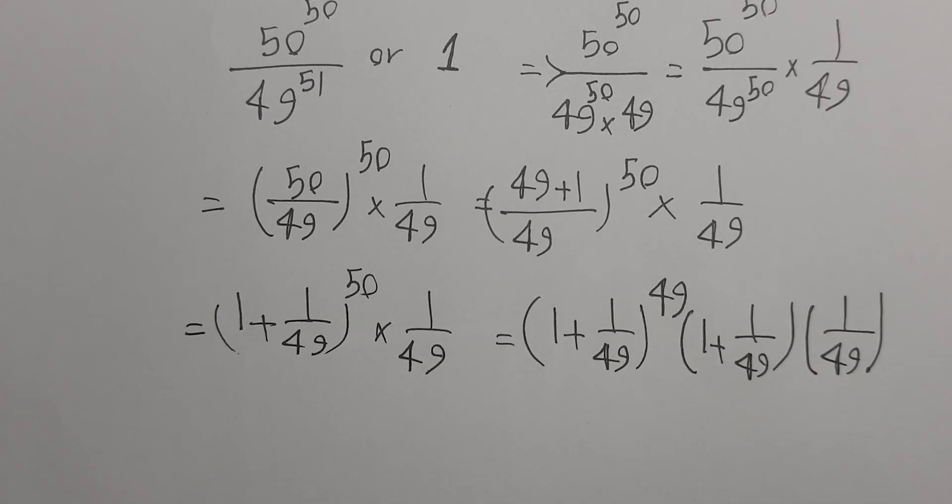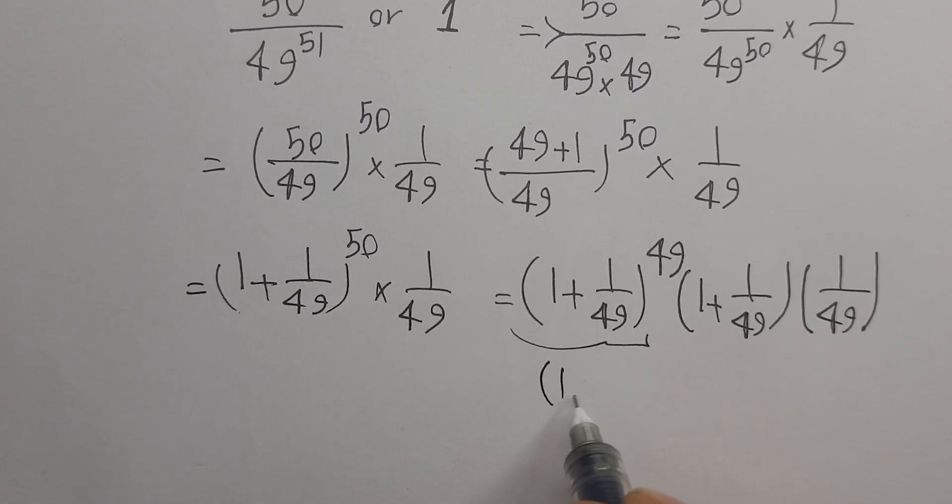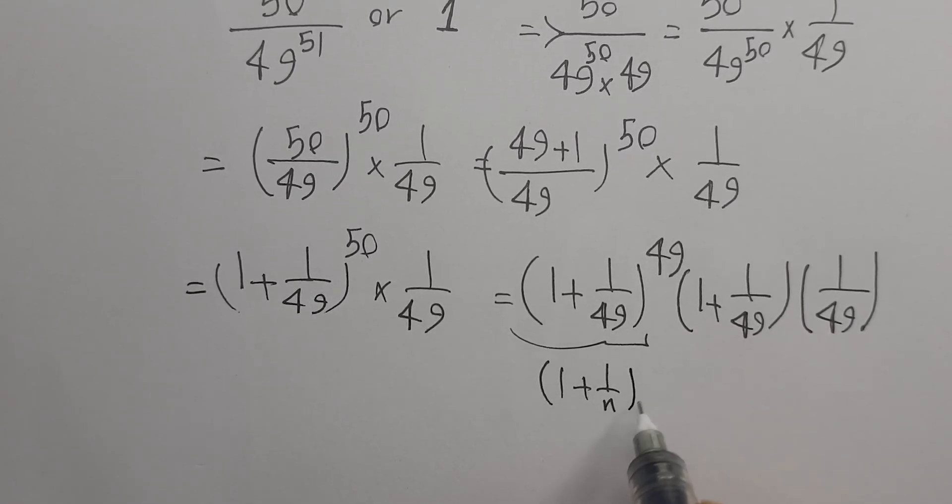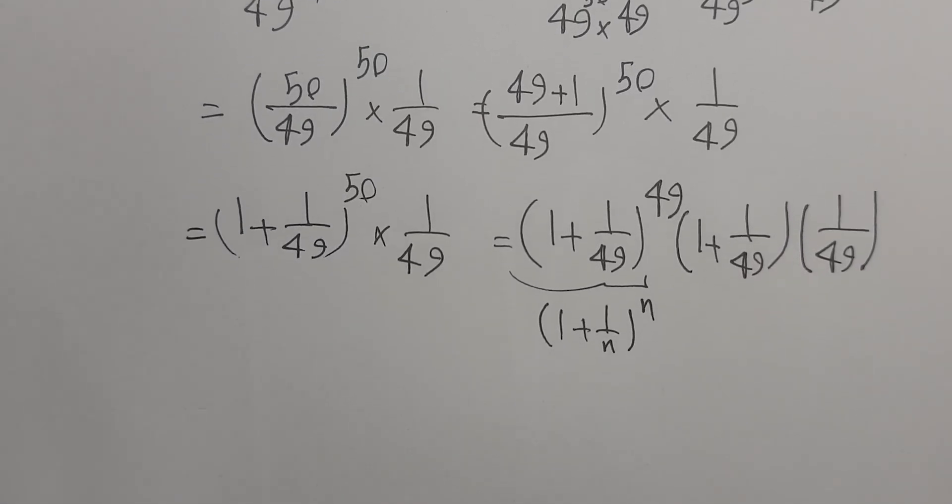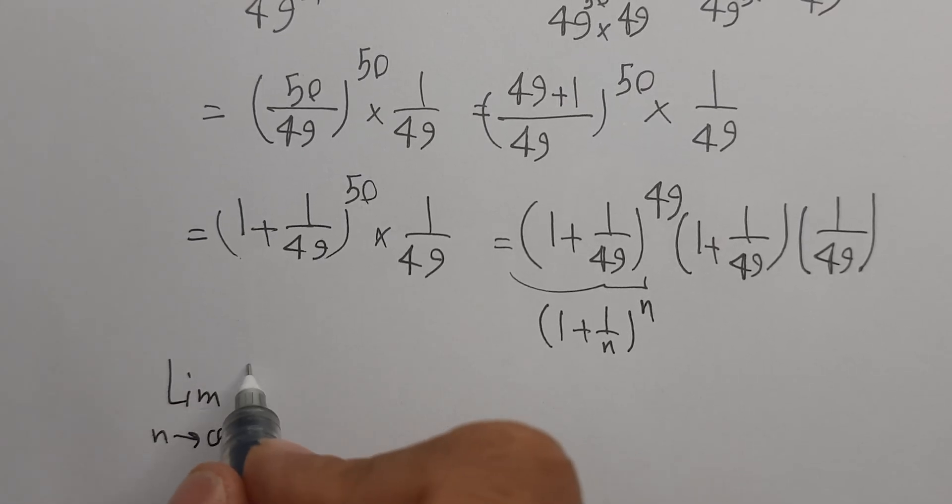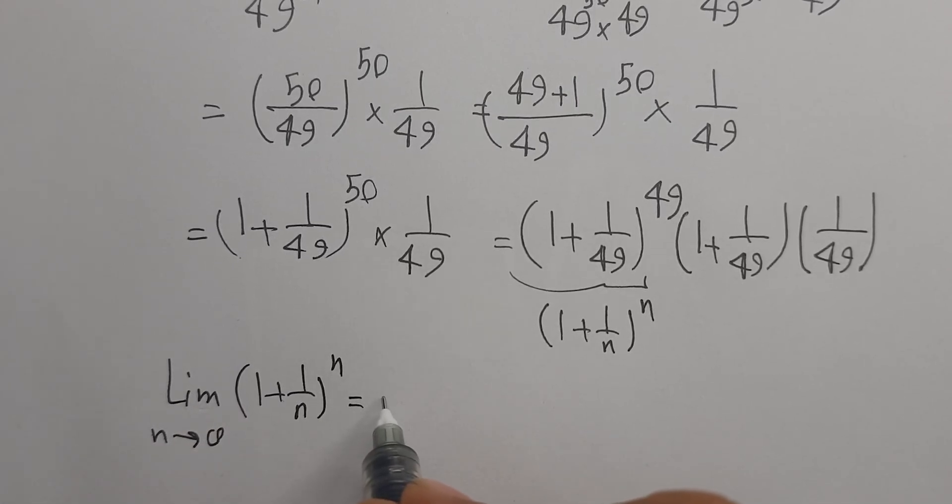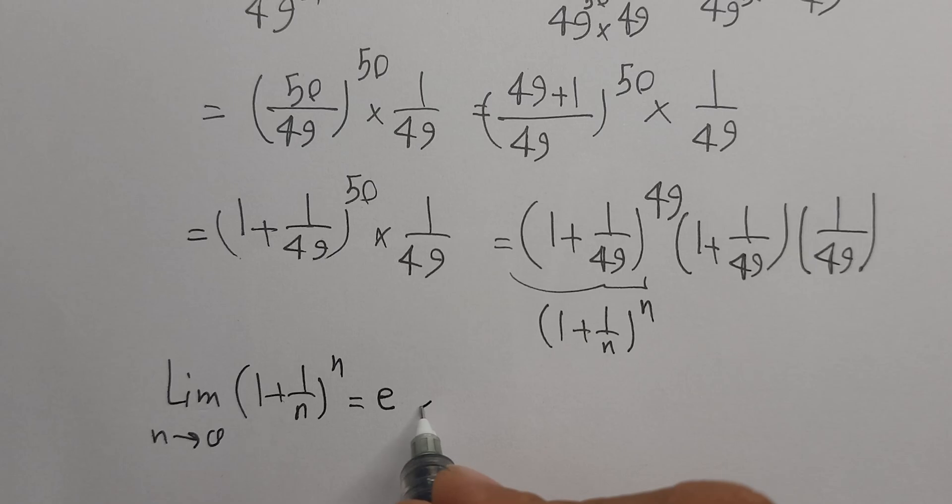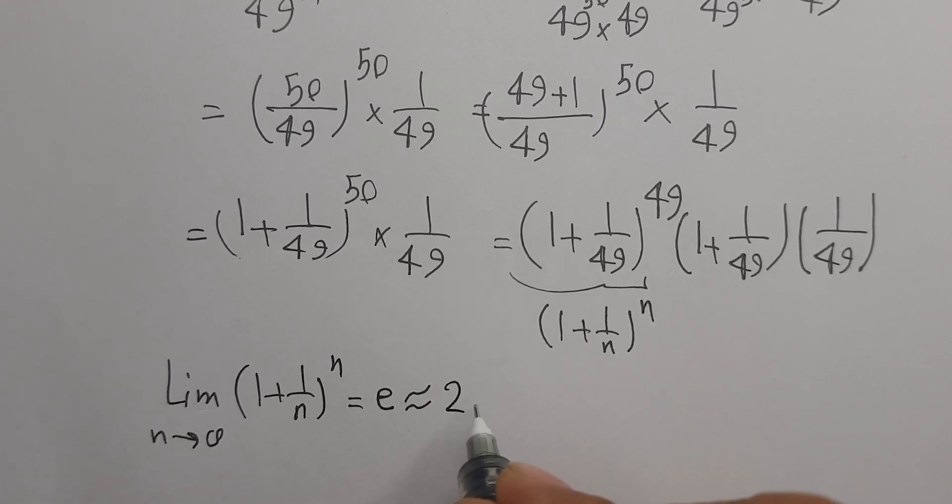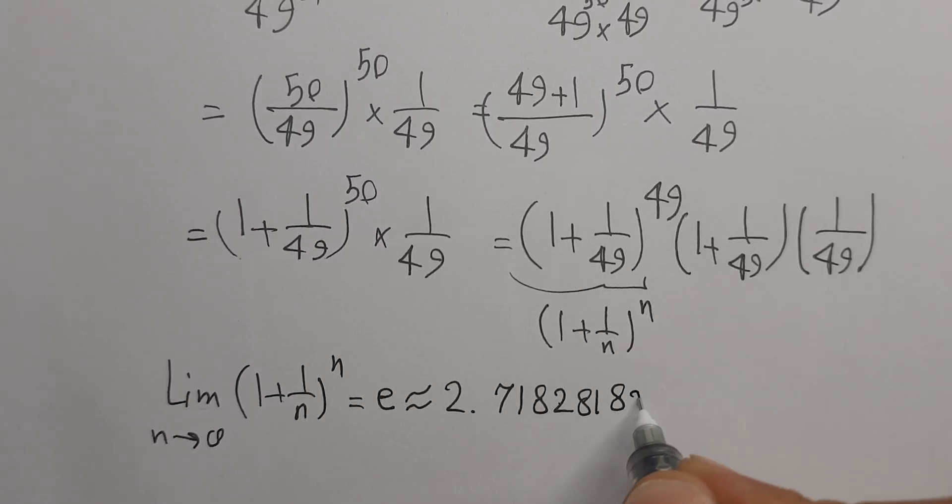So this is like 1 plus 1 over n all power n. As you know, the limit as n goes to infinity of 1 plus 1 over n all power n is e, and is approximately 2.718281828459045.